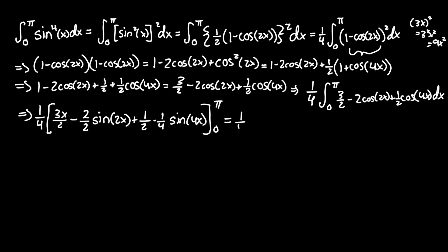Evaluating further, that's one fourth, times three halves x minus sine 2x, plus one eighth sine 4x, between zero and pi. Now we can finally plug in the boundaries.